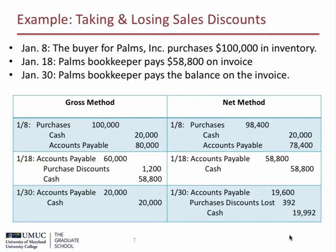Now let's use the net method, which assumes the buyer will pay the invoice within the discount period. The purchase is recorded at the net amount, which equals $100,000 minus the $20,000 payment up front minus 2% of $80,000. Within 10 days of the invoice date, the bookkeeper pays $58,800 as given in the problem. After 10 days from the invoice date on January 30th, the bookkeeper pays the balance on the account, which is $19,600, but must also recognize and pay the amount of the purchases discount lost for not paying within 10 days of the discount period.